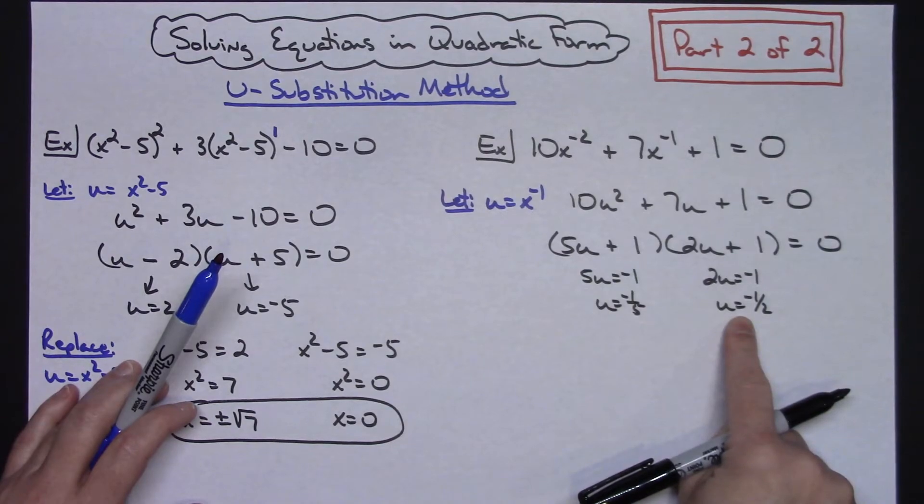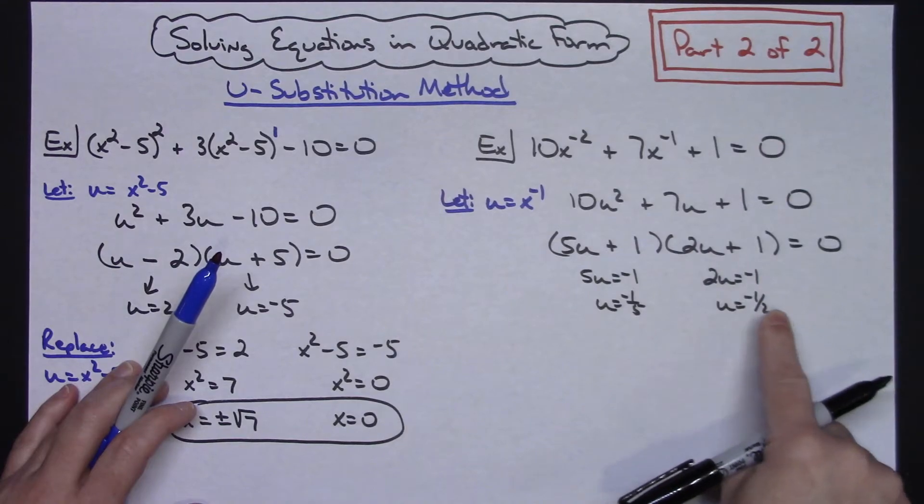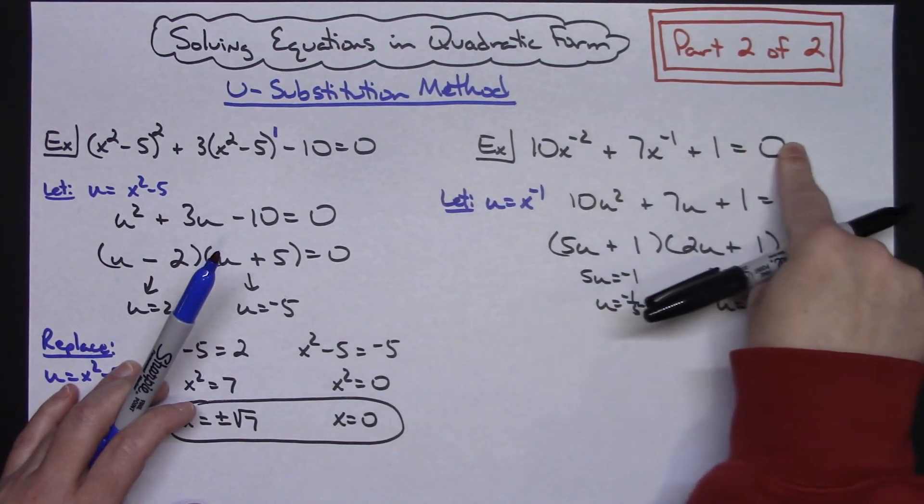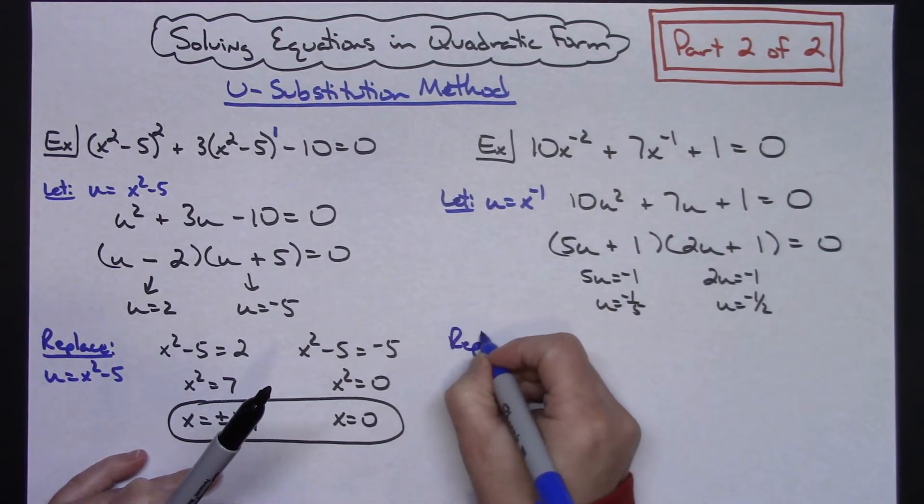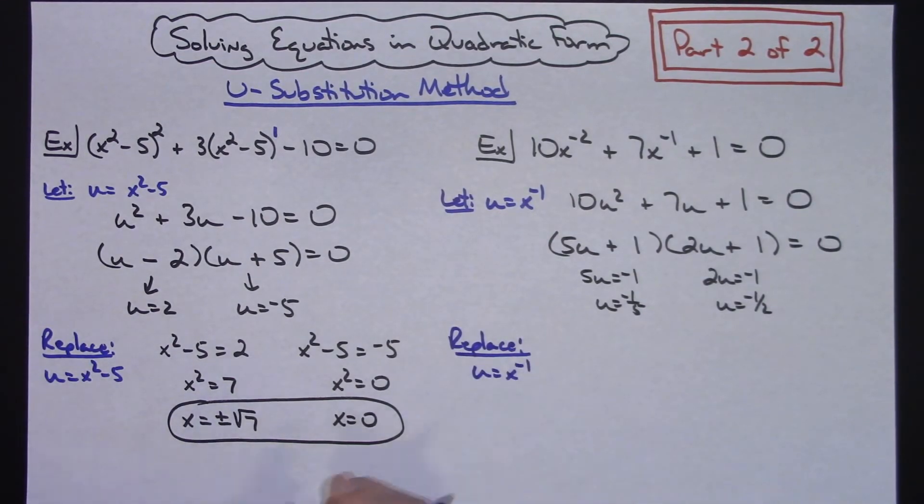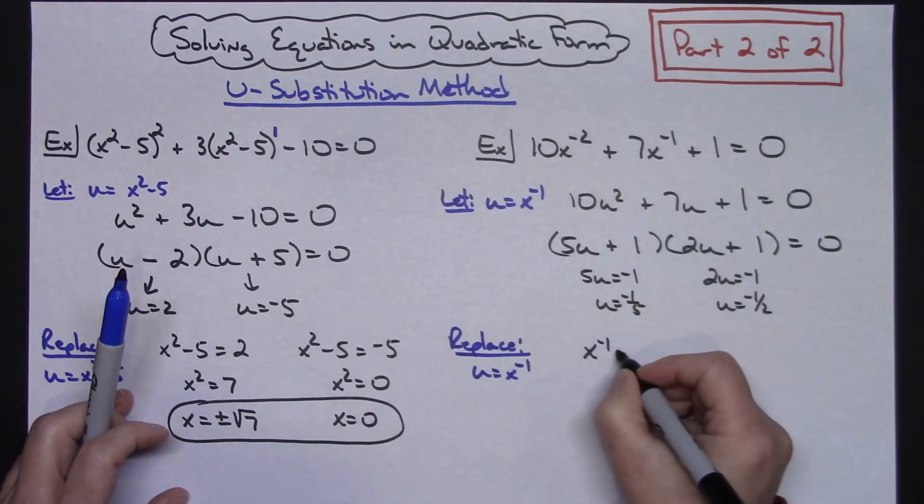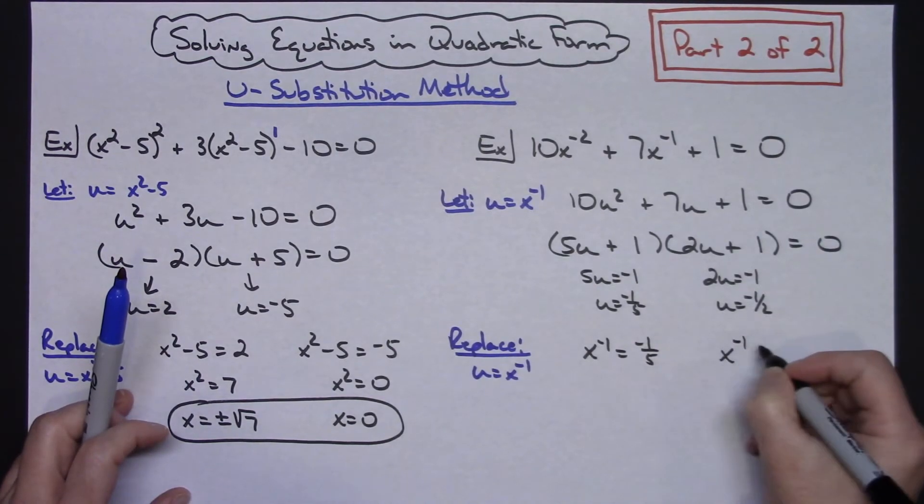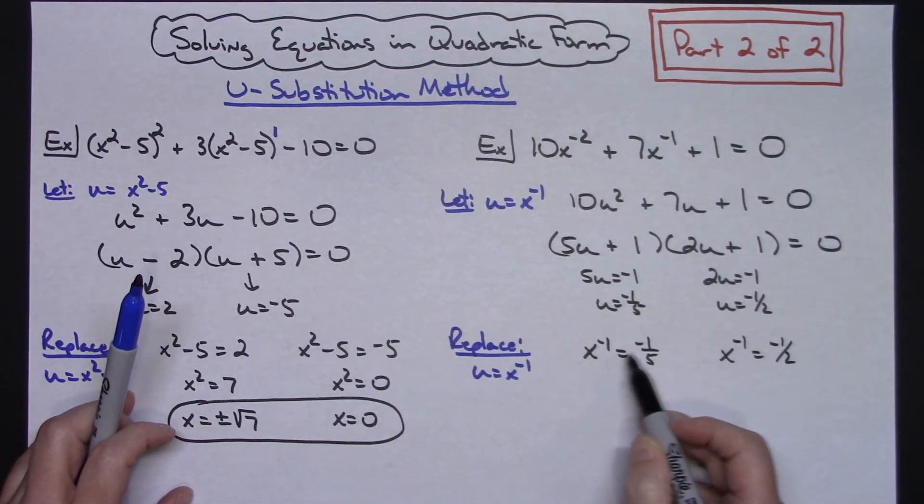Now I need to realize I'm not done yet. I have just solved for u because I rewrote that equation in terms of u. So I've got to replace my u with x to the negative 1 so that I get back in terms of x. I'm going to replace u equals x to the negative 1. So on each one of these, I'm going to do x to the negative 1 equals negative 1 fifth. And on this one, x to the negative 1 equals negative 1 half. Now here again, you've got to solve for x.